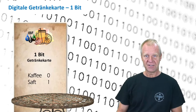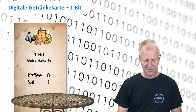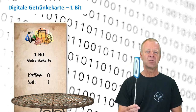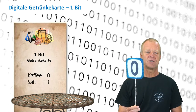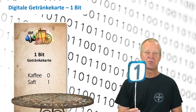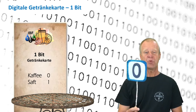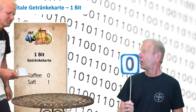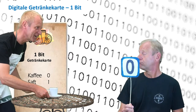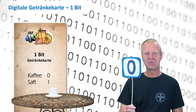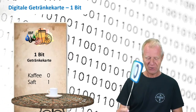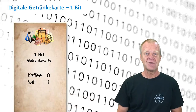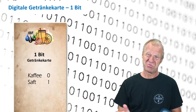We have here a drink menu. And by holding up zero or one, I can order either of the two different drinks. So I will try that with coffee. Wait up! Here it is sir, enjoy. Wow, that worked pretty well. Now we can see that this card option is very small.